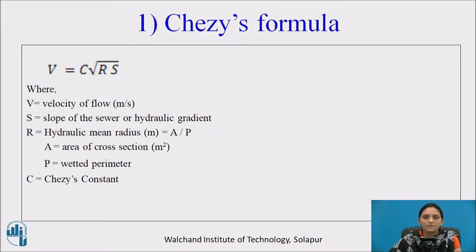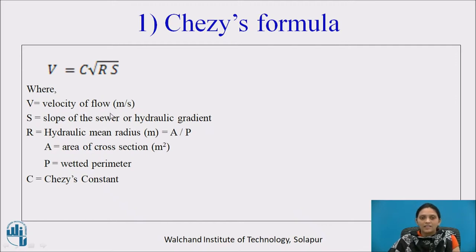First, Chezy's formula. Chezy gave a formula: velocity V is equal to C times the square root of R·S. Where V is the velocity of flow in meters per second, S is the slope of the sewer or hydraulic gradient, and R is the hydraulic mean radius in meters, computed as area divided by perimeter, with area in square meters. C is Chezy's constant.